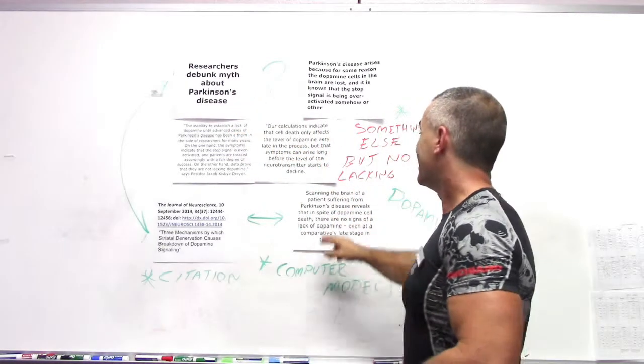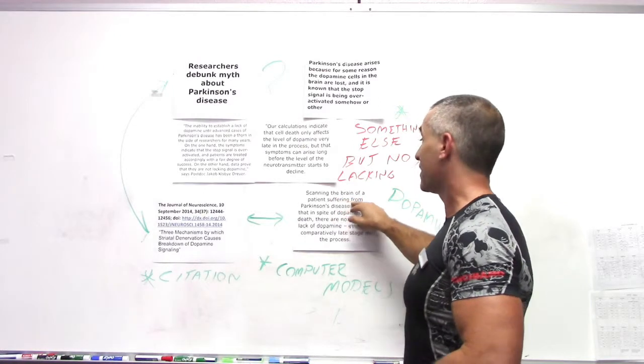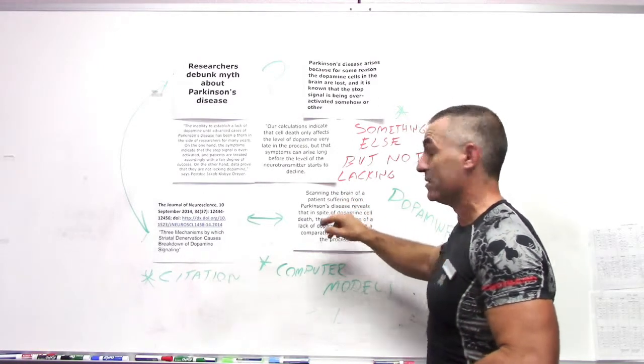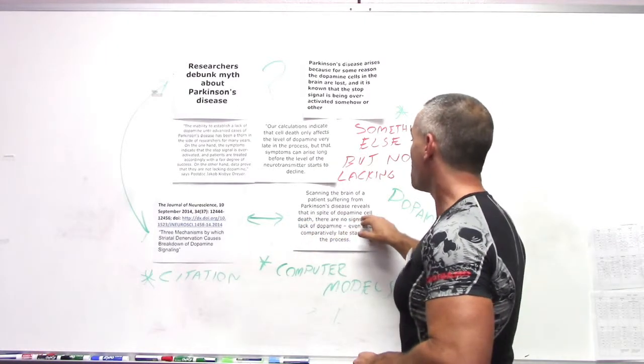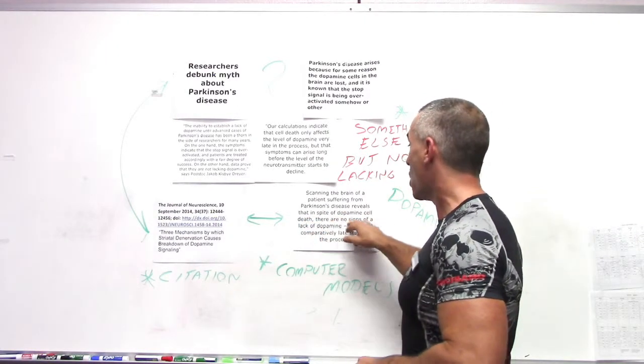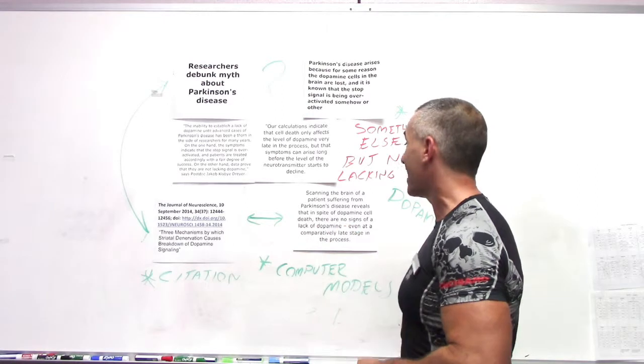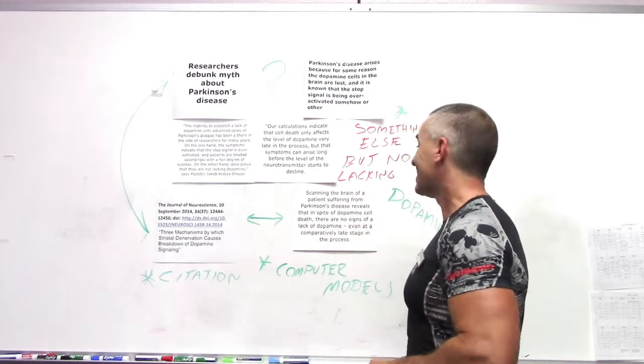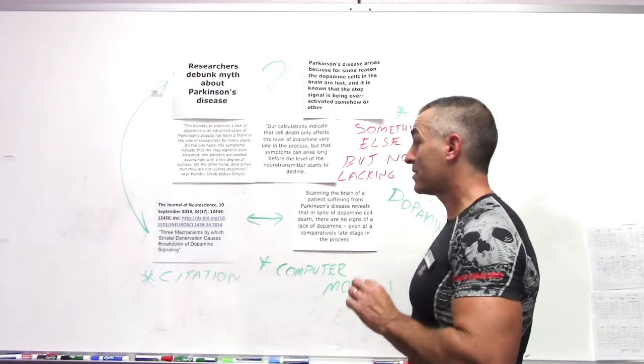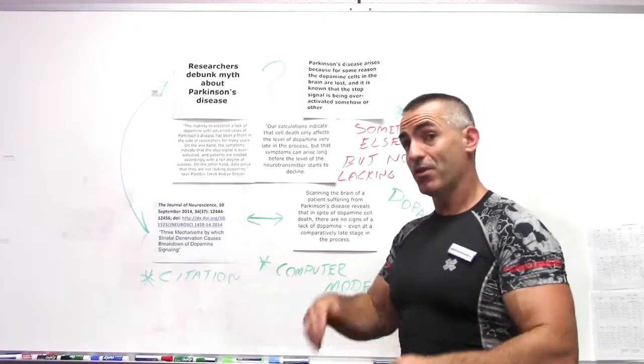And to conclude, scanning the brain of patients suffering from Parkinson's disease reveals that in spite of dopamine cell death, there are no signs of a lack of dopamine, even at comparatively late stages in the process. Again, these are their words, not mine.